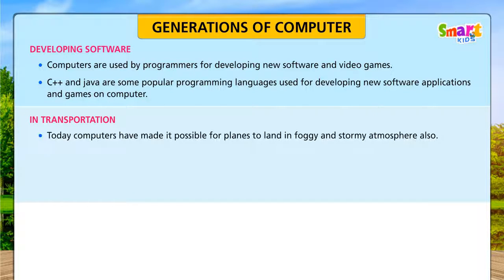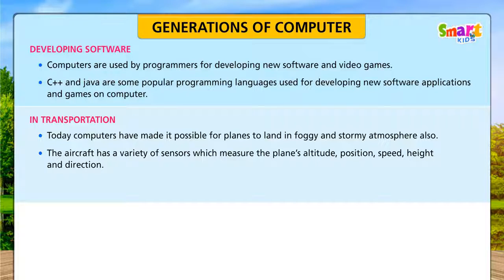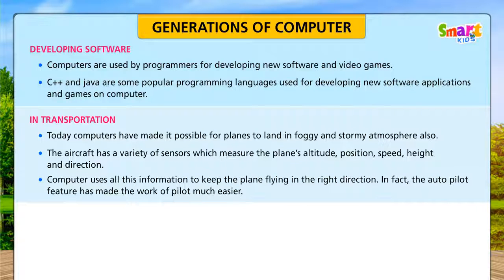In Transportation: Today, computers have made it possible for planes to land in foggy and stormy atmosphere also. The aircraft has a variety of sensors which measure the plane's altitude, position, speed, height, and direction. Computers use all this information to keep the plane flying in the right direction. In fact, the autopilot feature has made the work of the pilot much easier.